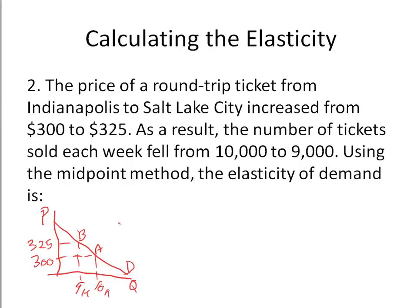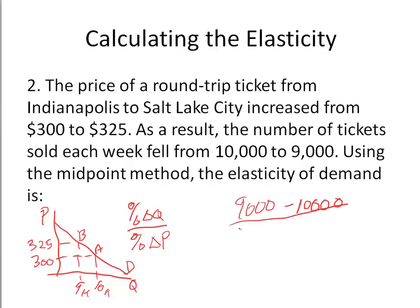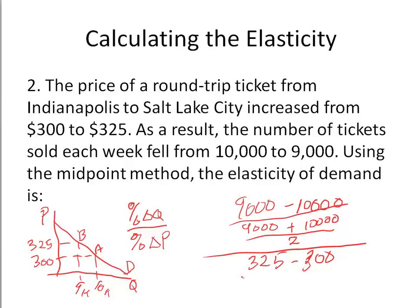We know that elasticity equals the percentage change in quantity over the percentage change in price. The change in quantity is 9,000 minus 10,000, divided by the average quantity of (9,000 plus 10,000) divided by 2. Then we need the percentage change in price: 325 minus 300, divided by the average price of (325 plus 300) divided by 2.